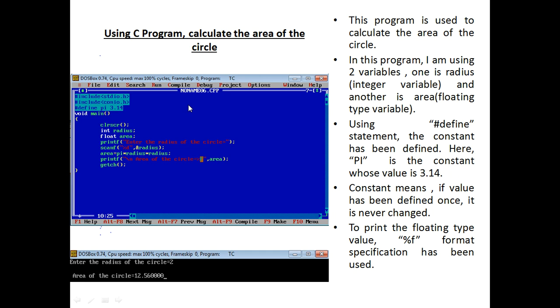First of all, I'll describe using C program, calculate the area of the circle. In this program we have declared two variables: one is radius, which is an integer variable, and another is area, which is a floating type variable. We also define a constant using a define statement. That is PI. We know that the value of PI is 3.14.